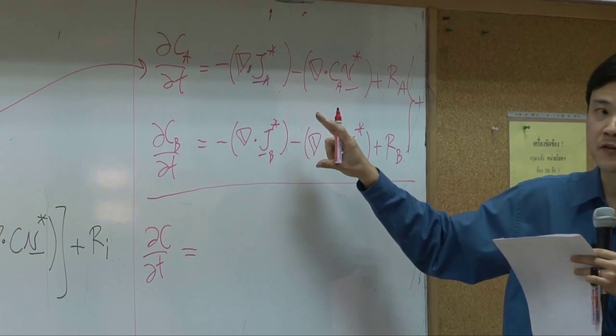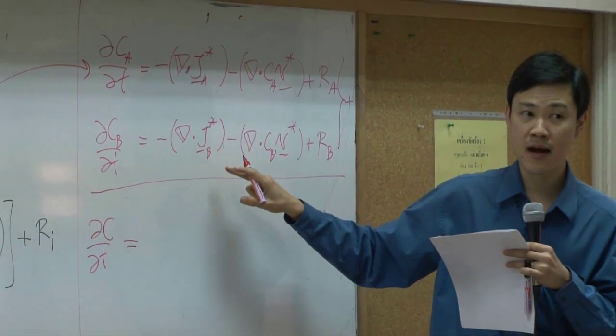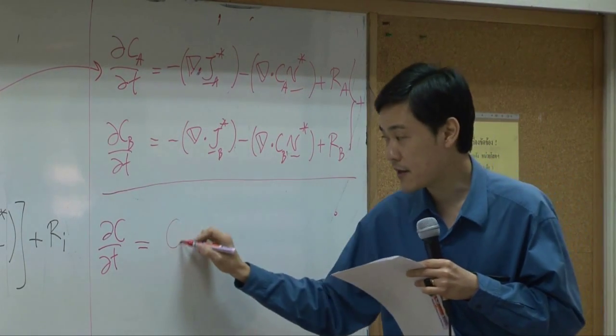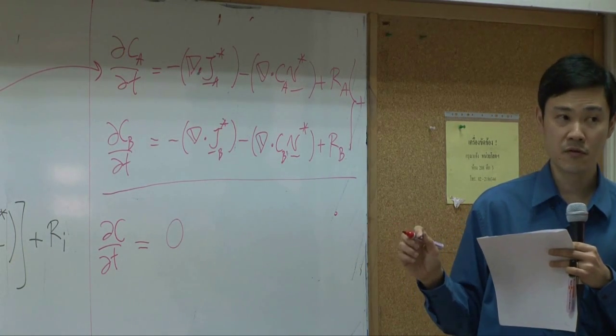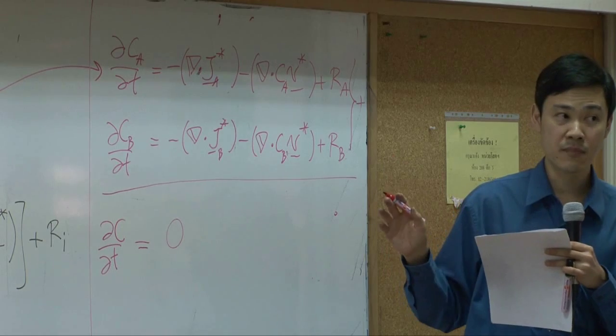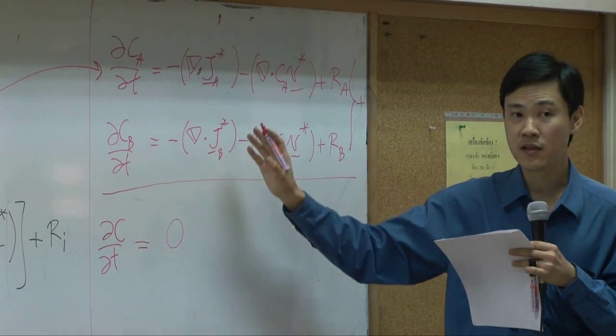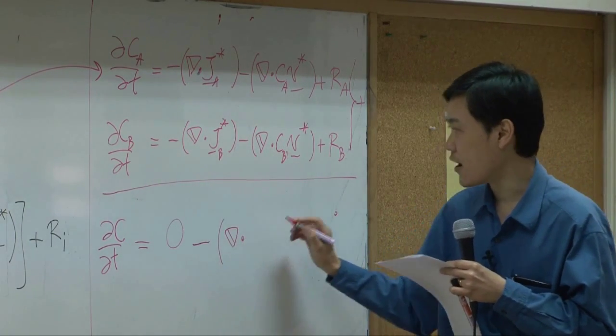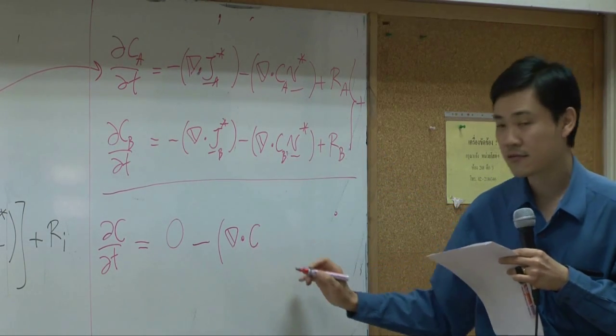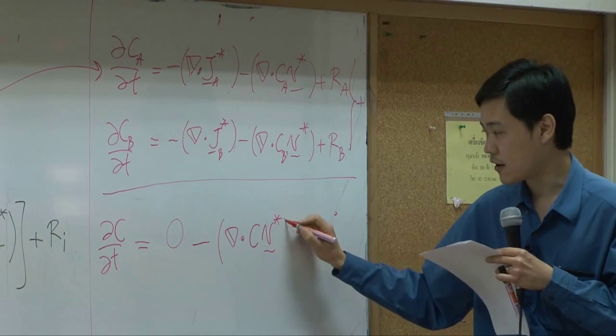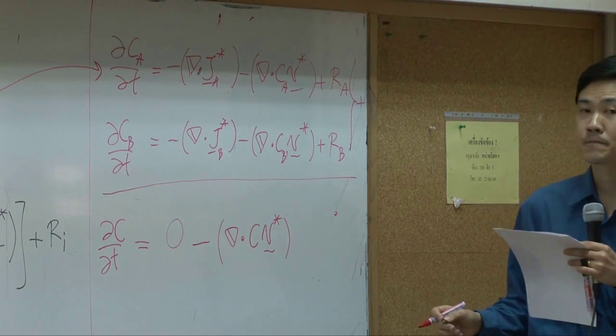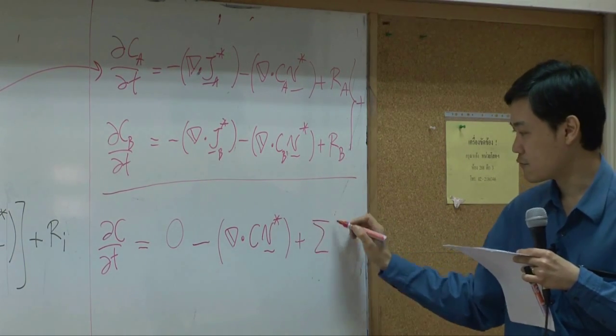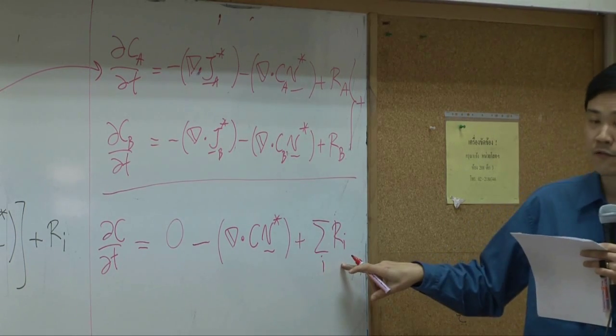Next term is diffusion flux. JA star and JB star combined should equal to zero. By definition, summation of diffusion flux is always zero. Doesn't matter whether you are represented in mass basis or molar basis. Summation would always give you zero. Next term, it will be del dot CA plus CB. You get total C and V star. The last term, RA plus RB. I'm going to say this one is summation of rate of reaction for all species.